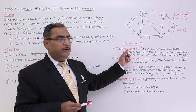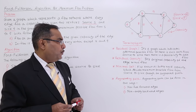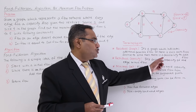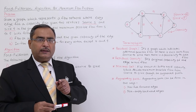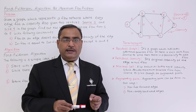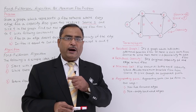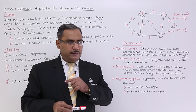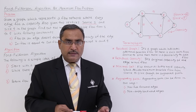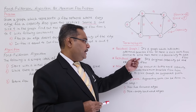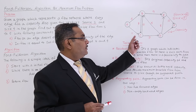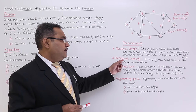The residual graph is a graph which indicates additional possible flow. If there is a path from source to sink, there is a possibility to add flow through that path, provided the remaining capacity is non-zero for all edges on that path. Residual capacity is the original capacity of the edge minus the current flow. That is known as the residual capacity.